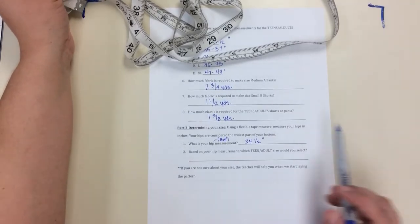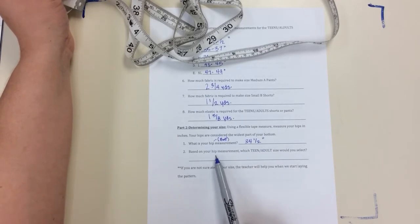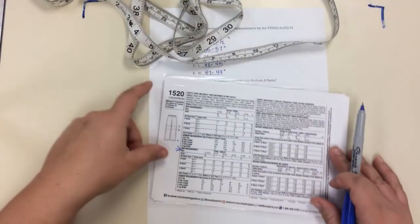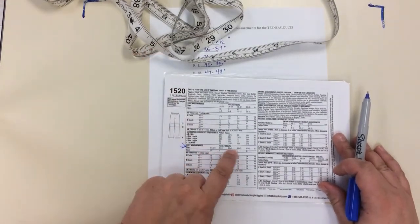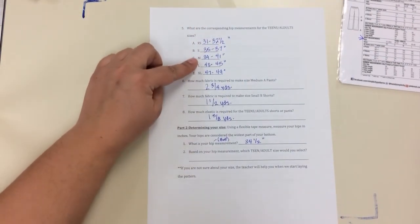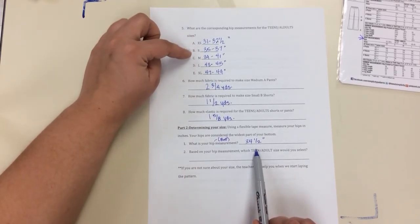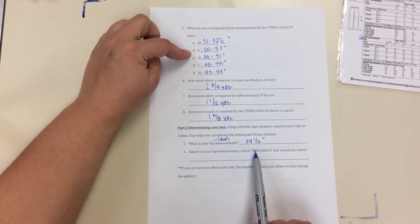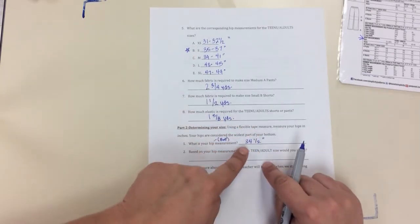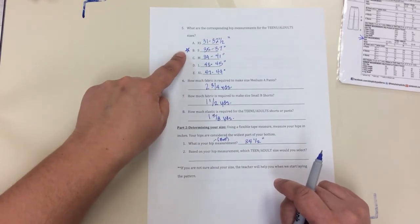Now what we use this information to do is figure out what size am I. So based on my hip measurement, what teen adult size would I select. This is where we come back to either looking at the envelope or looking at our chart up here. So 34 inches - I can see I'm bigger than an extra small and I'm smaller than a small. So I'm going to put a little star right here. For this person, you have to measure your own hips and see where you fit. For this person they have to decide - are they going to stick with extra small or stick with small.